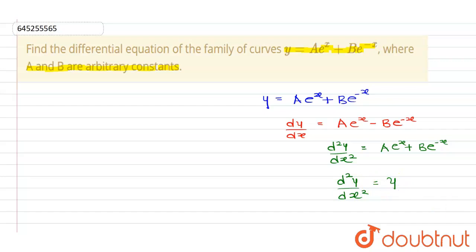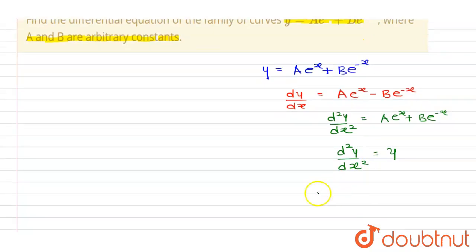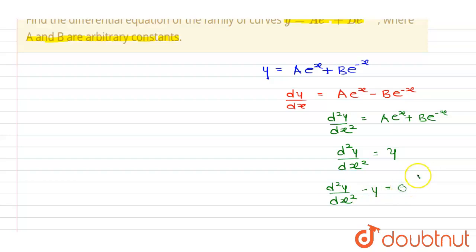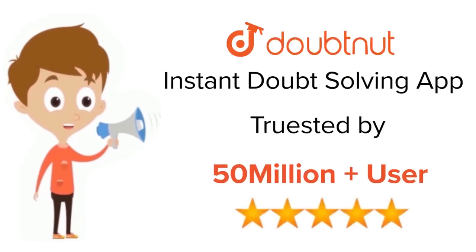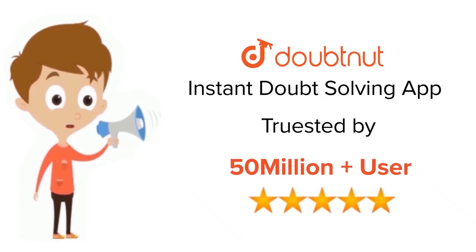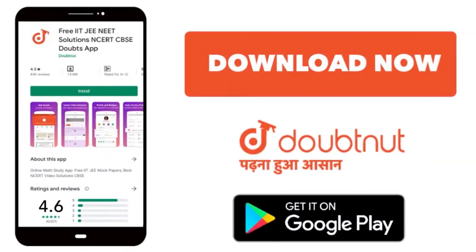Therefore, d²y/dx² = y, which gives us d²y/dx² - y = 0. This is our required differential equation. Trusted by more than 5 crore students for class 6 to 12, IIT JEE, and NEET — download the Doubtnut app today.